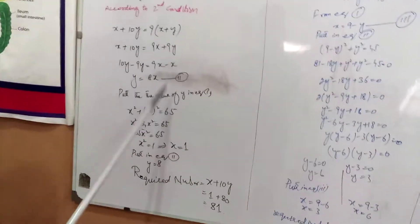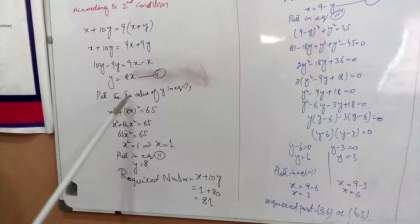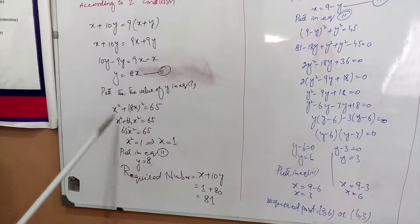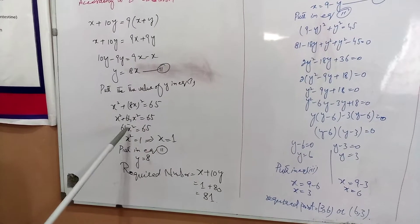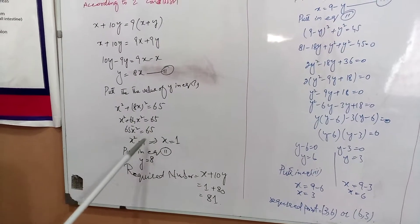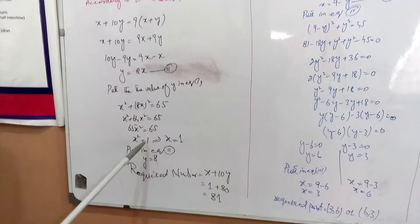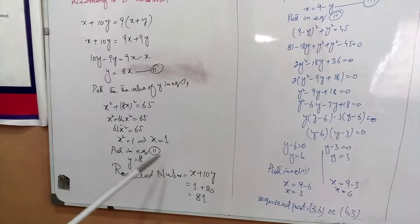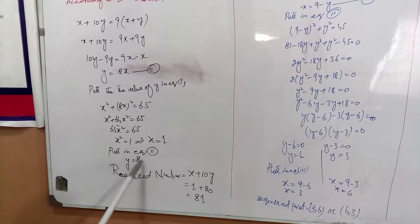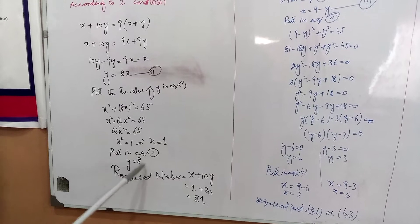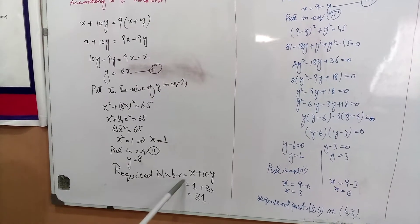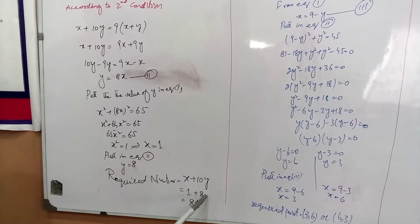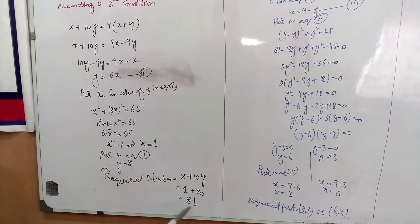Solving the second condition, we simplify to find the relationship between x and y, giving y equal to 8x. Substituting back, the required number x plus 10y equals 1 plus 10 into 8, which gives us 81 as the required number.